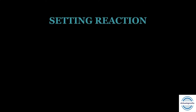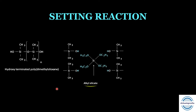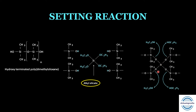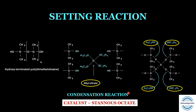In the setting reaction of condensation silicone: the basic polymer hydroxyl-terminated polydimethylsiloxane, in the presence of tetra ethyl orthosilicate (the cross-linking agent), forms a three-dimensional network through the terminal hydroxyl groups. Ethyl alcohol is released as the byproduct. The evaporation of this ethyl alcohol is responsible for the condensation occurring in the set silicone impression. Stannous octoate acts as the catalyst throughout.